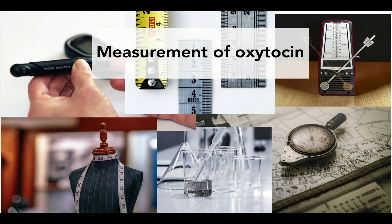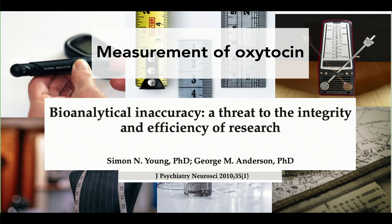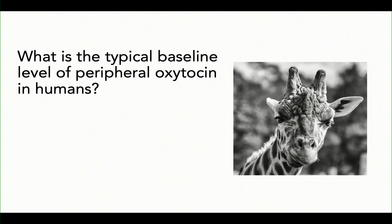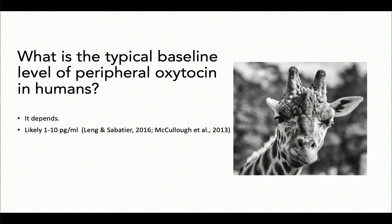Now I want to shift gears and talk about measurement in oxytocin research. Bioanalytical inaccuracy is a threat to the integrity and efficiency of research. People will sometimes ask me, what's the typical level of oxytocin in humans? Our group and some others think it's likely between one and ten picograms per milliliter. How could it be that we think this and other people think something else? I'm going to explain some of the reasons why this is the current reality.